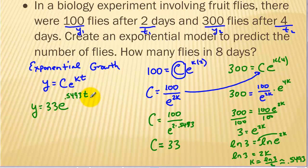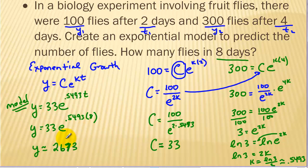We've answered our model. This is the model. Now we want to use that to plug in t being 8 days. So we calculate putting 8 for the t. We get y is approximately 2,673 fruit flies after 8 days. And that's our final answer.